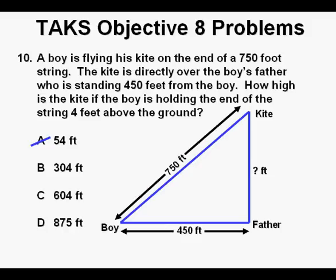The best way to do this problem, I think, is to look at the answers first. Answer A, 54 feet, is way too low, so we cross it off. And answer D, 875 feet, is longer than the hypotenuse of the string length, and so is impossible, and we cross it off as well. Between the two remaining answers, 304 feet looks pretty low, so if we had to, we would cross it off as well. But let's use the Pythagorean theorem, A squared plus B squared equals C squared.